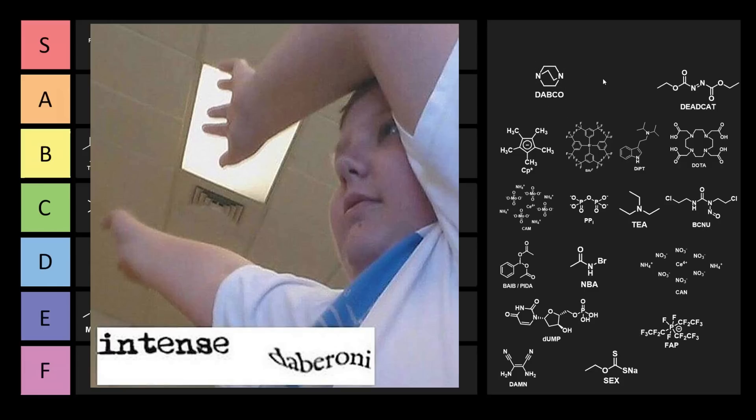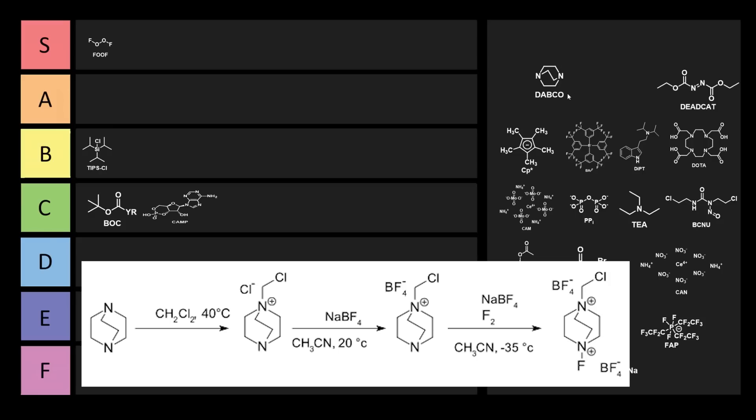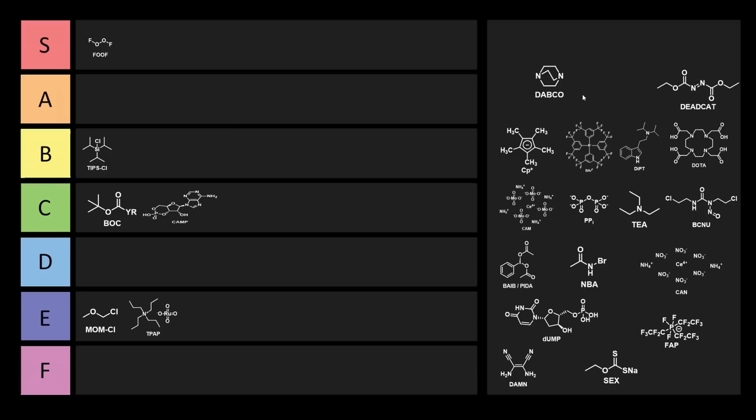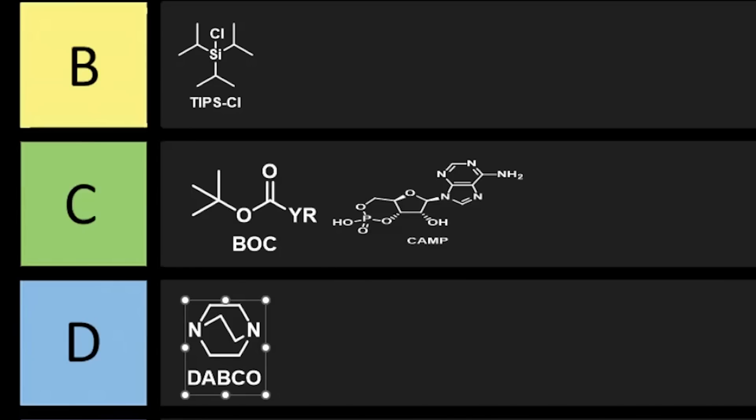Now DABCO. DABCO is 1,4-diazabicyclo[2.2.2]octane, a nucleophilic tertiary amine base used as a base catalyst for many applications. One chemical made from DABCO is SelectFluor, an electrophilic fluorinating agent super common in research. DABCO is also used for the Baylis-Hillman reaction. Why don't we dab DABCO into D tier because it starts with a D?